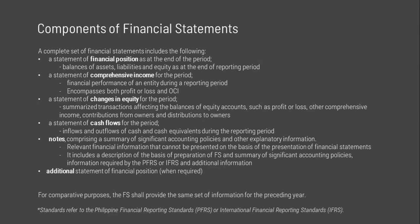The statement of changes in equity shows the following information: first, the effects of changes in accounting policy through retrospective application, or correction of prior period errors through retrospective restatement; second, total comprehensive income for the period; and third, for each component of equity, a reconciliation between the carrying amount at the beginning and end of the period, showing separately changes resulting from profit or loss, other comprehensive income, and transactions with owners such as contributions by and distributions to owners. Retrospective adjustments and retrospective restatements are presented in the statement of changes in equity as adjustments to the opening balance of retained earnings, rather than as changes in equity during the period.